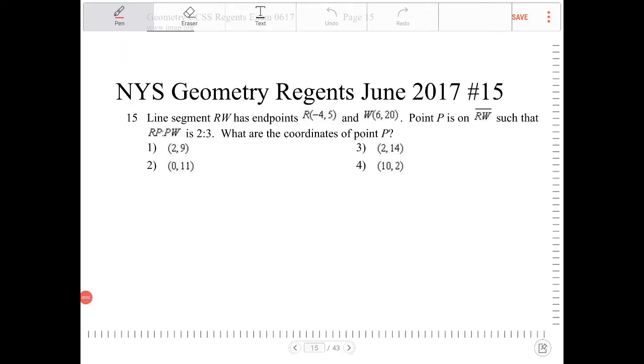Line segment RW has endpoints R(-4,5) and W(6,20). Point P is on RW such that RP to PW is broken into ratios of 2 to 3. What are the coordinates of point P?